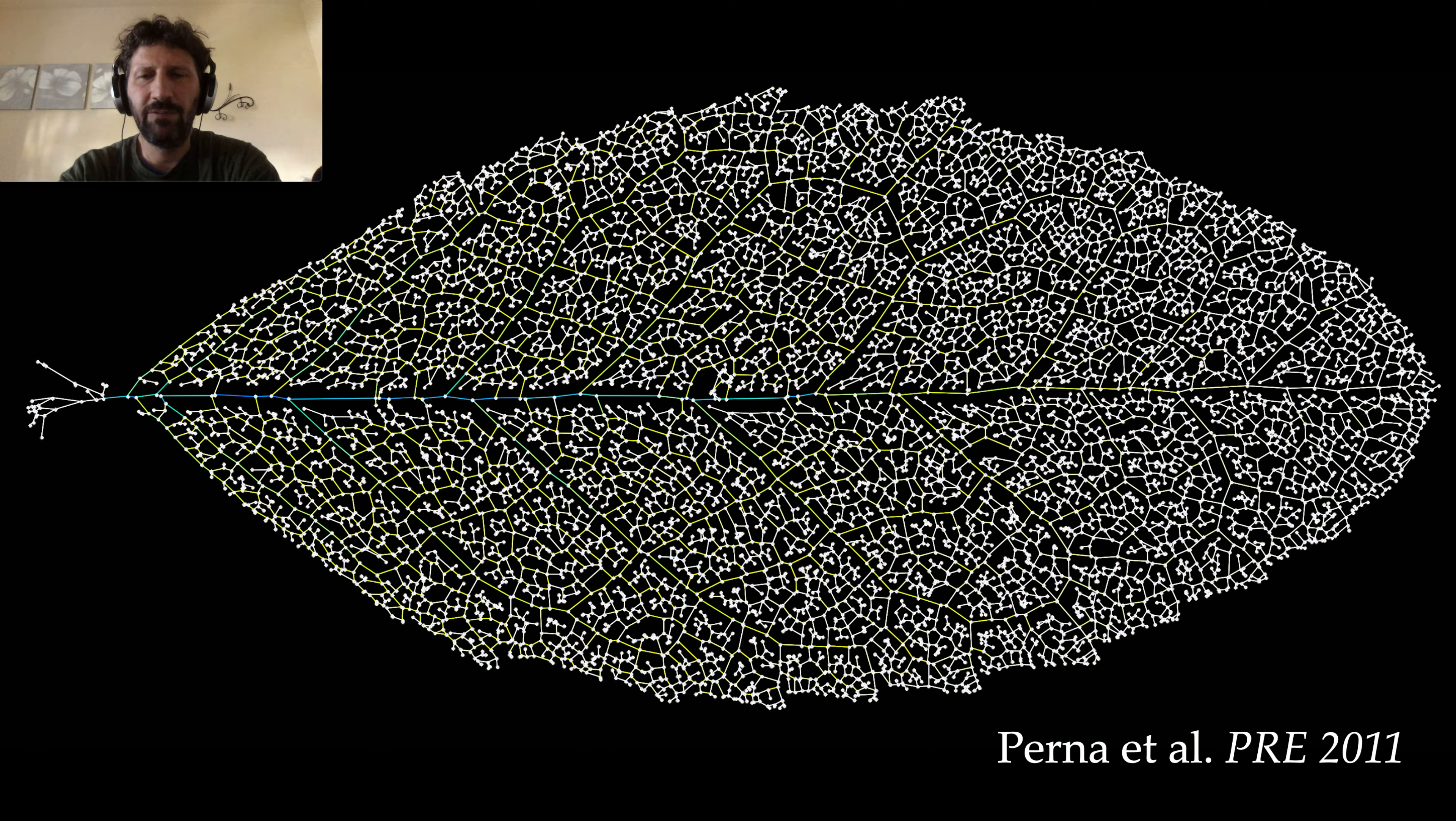But what is important when we talk about living systems is that these patterns also have a function. In this example, the veins carry water and nutrients across different parts of the leaf, and having a network that is highly meshed like this one ensures that the network is robust to random disconnections.